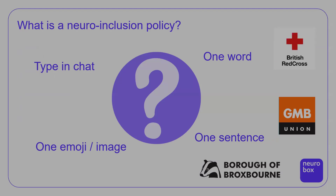What would be great is if you type in the chat function — one word, one sentence, it could be an emoji or an image — what comes to mind when you think 'neuro inclusion policy'?